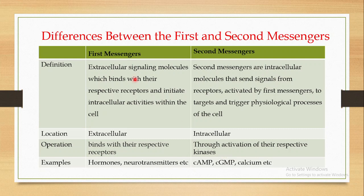Examples from the first messenger family include hormones and neurotransmitters. Examples from the second messengers include cyclic AMP, cyclic GMP, and calcium.